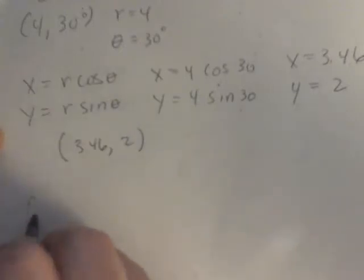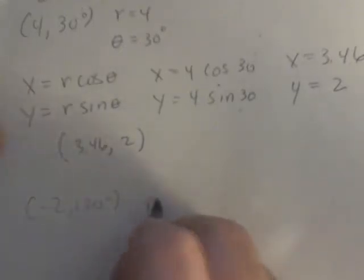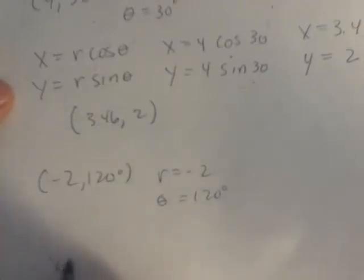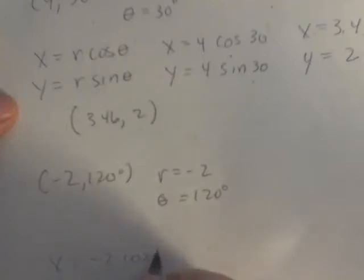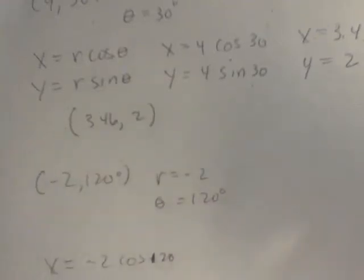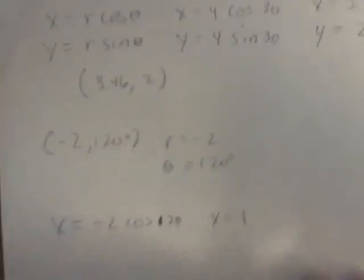Let's look at the other example where R equals negative 2 and theta equals 120 degrees. I'll do the same thing. x equals negative 2 cosine 120. I get x equals 1.